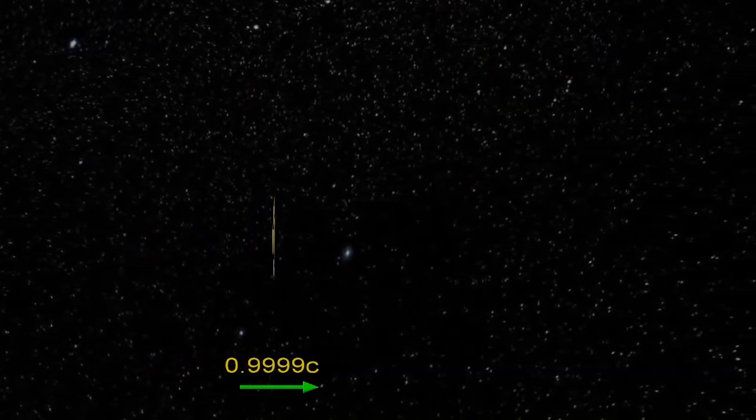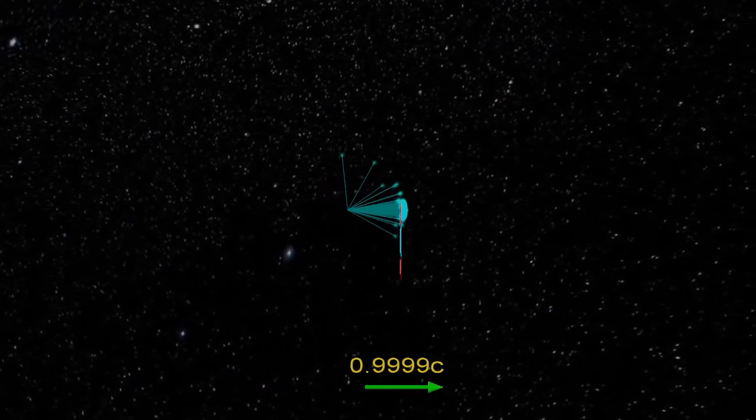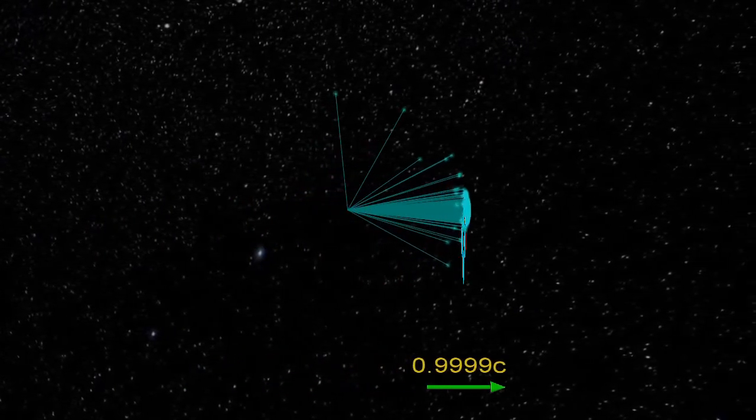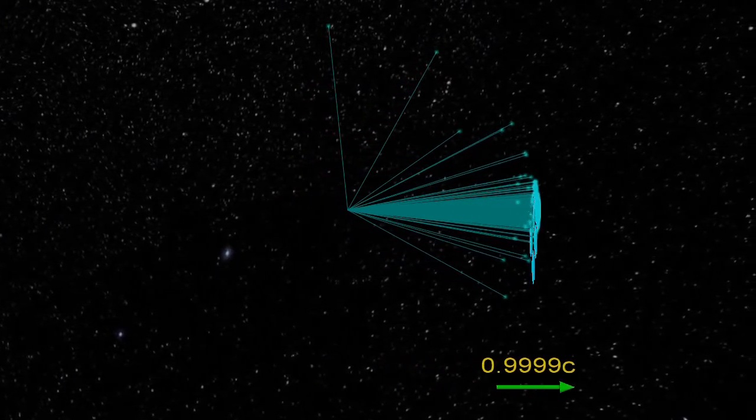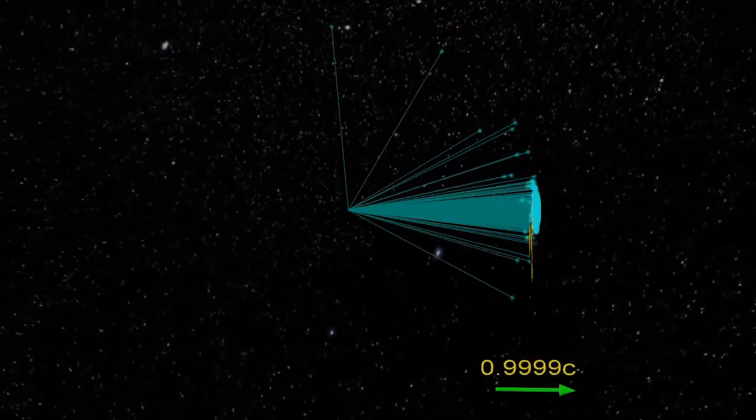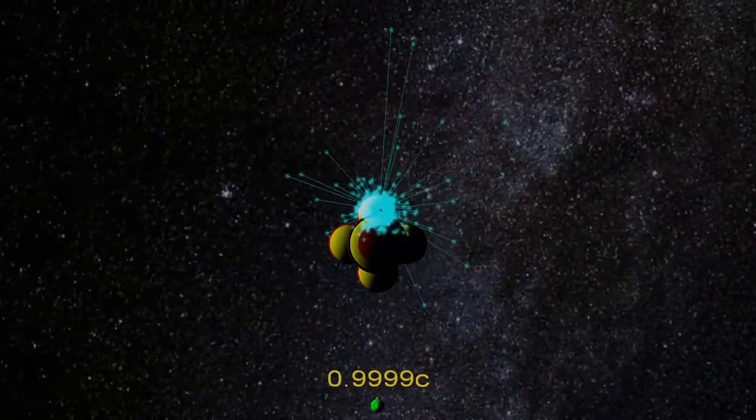At 0.9999c, these are like the speeds of electrons and protons rushing away from around black holes. Most of the light is emitted in the direction of motion. Very little is directed behind.